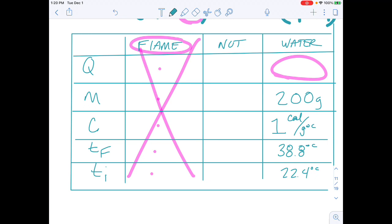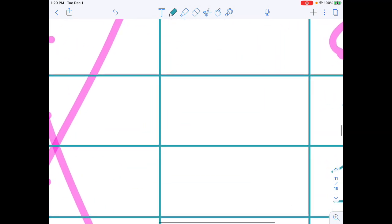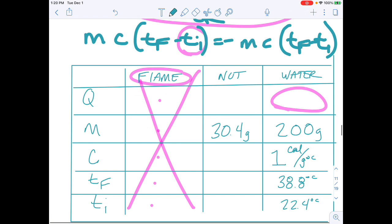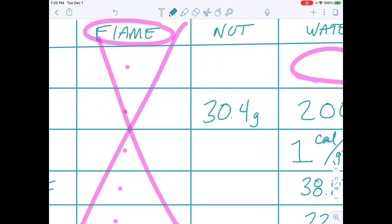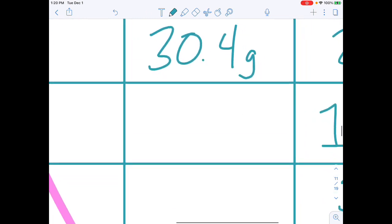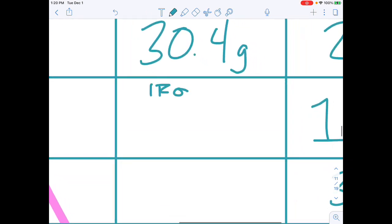Well, a couple of things. I went and found the mass. The mass of that was 30.4 grams. And it's made of iron. It's probably a zinc-coated steel. We're going to call it iron. And iron, the specific heat of iron is 0.11 calories per gram degree Celsius.